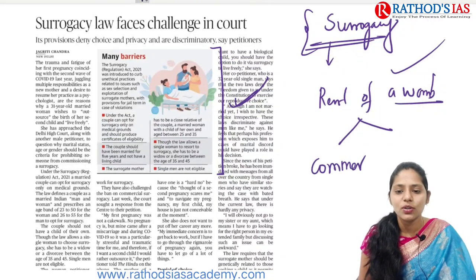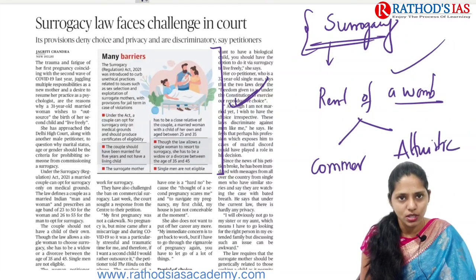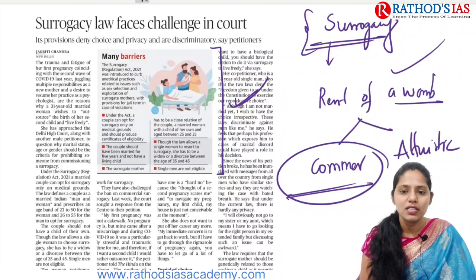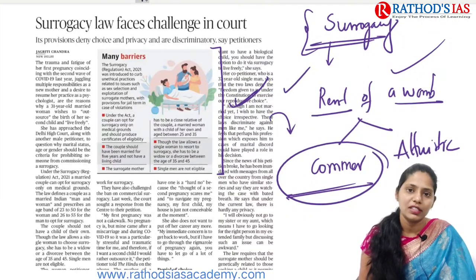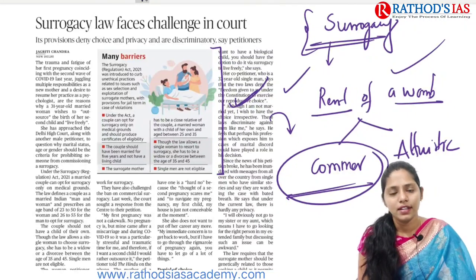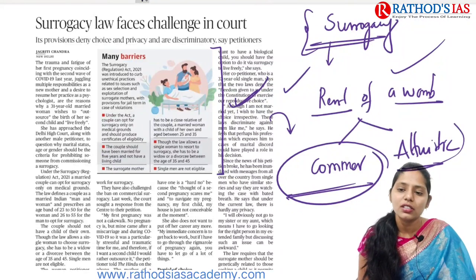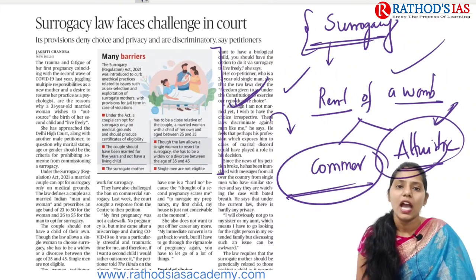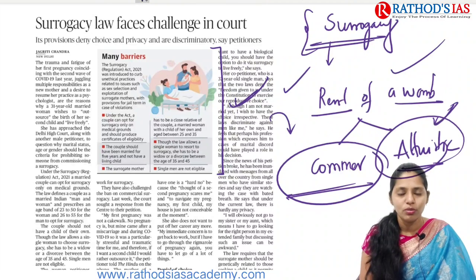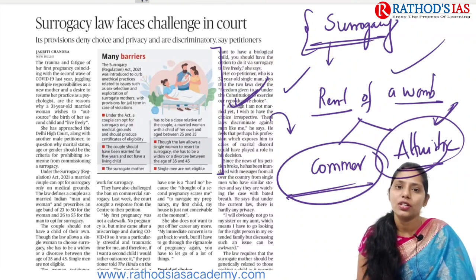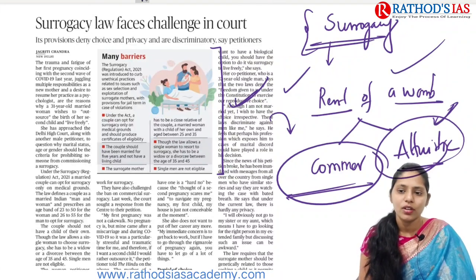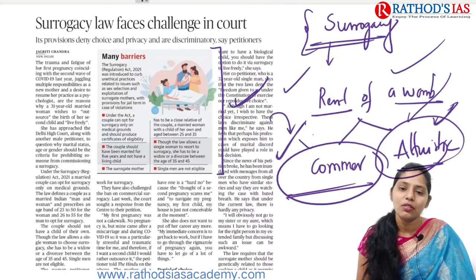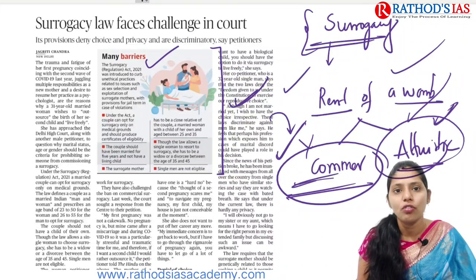There are two types of surrogacy: commercial surrogacy and altruistic surrogacy. Commercial surrogacy means paying money — say five or ten lakhs — as rent of a womb. Altruistic surrogacy means no direct payment; only medical charges and insurance for the surrogate woman during pregnancy are covered. In India, commercial surrogacy has been banned under the Surrogacy Regulation Act of 2021.